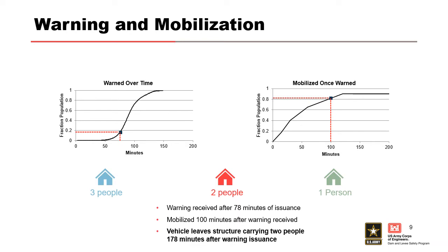LifeSIM is doing this for every structure, for all population groups, every iteration. And every iteration is potentially a slightly different warning function and mobilization function, because those functions were defined with uncertainty. So every iteration will be a slightly different function based on these uncertainty bands.